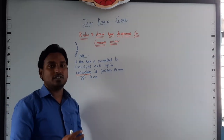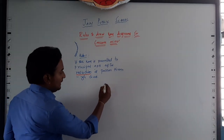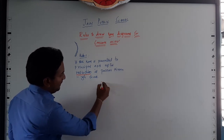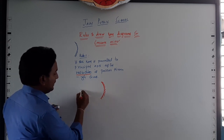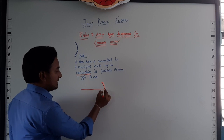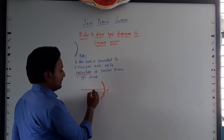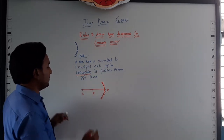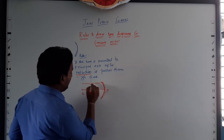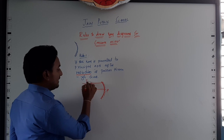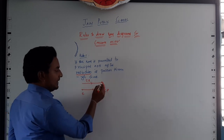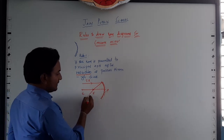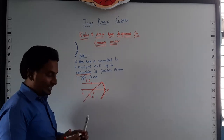Here we will learn 4 rules to draw ray diagrams. So I will draw a mirror now. This is a concave mirror — keep in mind it is bulging inwards. I will draw the principal axis. This is the pole, this is the focus, and this is the center of curvature. If the ray is parallel to the principal axis, this is the incident ray. After reflection, it will pass through focus — this is the reflected ray. This is rule number 1.